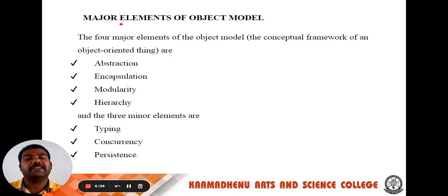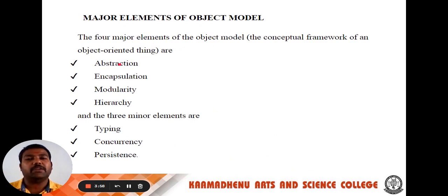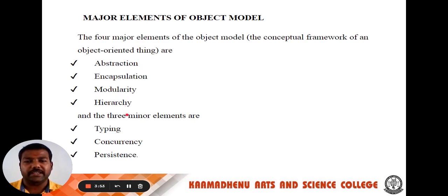Next, the major elements of the object model. The four major elements of the object model are as follows: first, abstraction; second, encapsulation; third, modularity; and fourth, hierarchy.